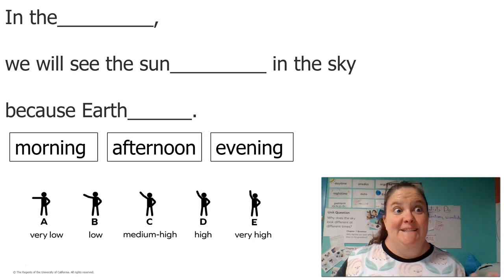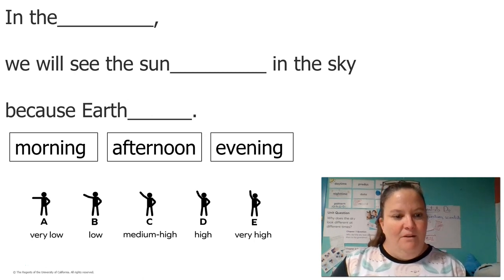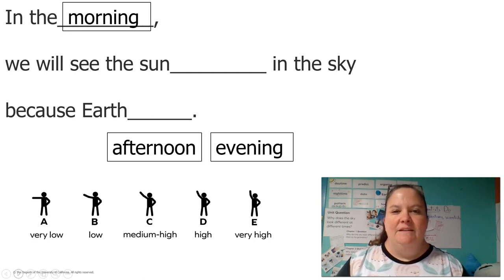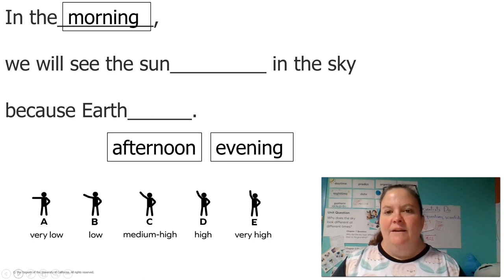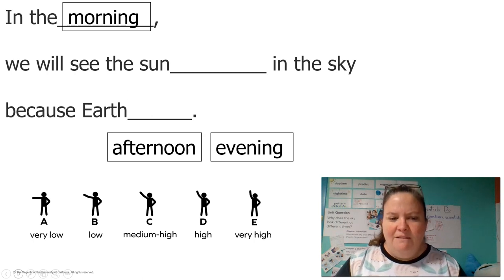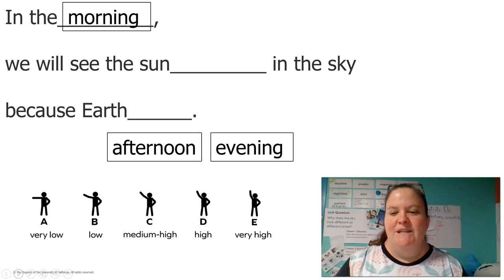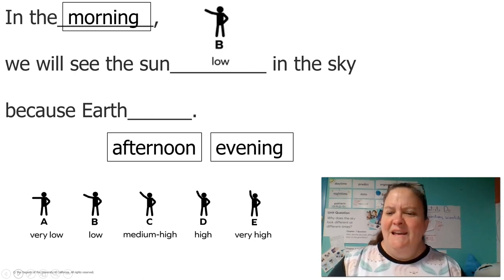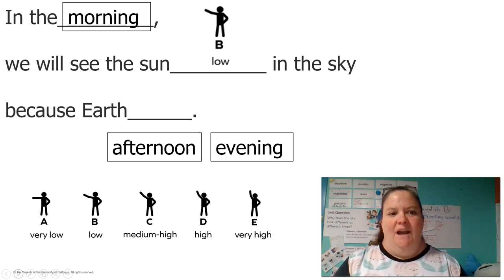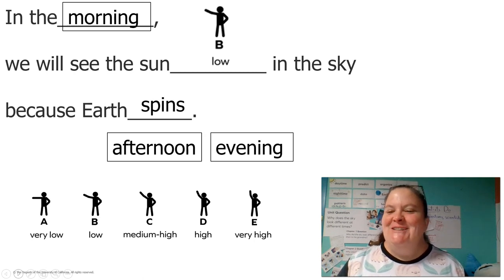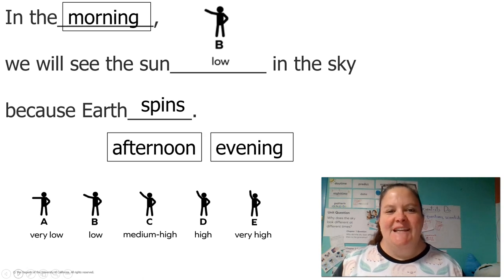Let's do this together with some sentence stems. In the morning, we will see the sun blank in the sky. Where do we see the sun in the morning — very low, low, medium high, high, or very high? We see the sun low in the sky. And why? Because Earth spins. Let's read it together: "In the morning, we will see the sun low in the sky because Earth spins."